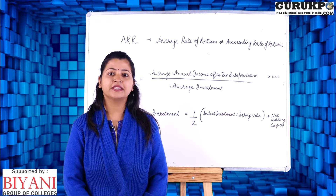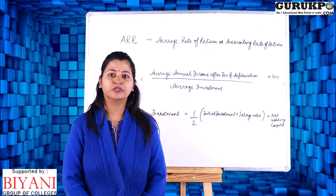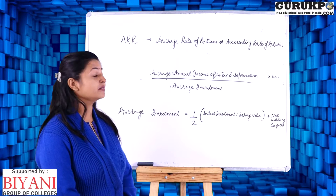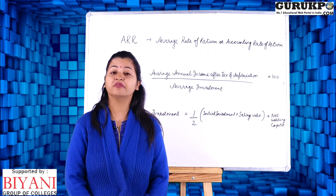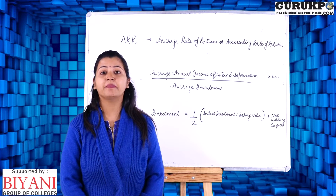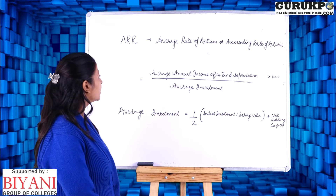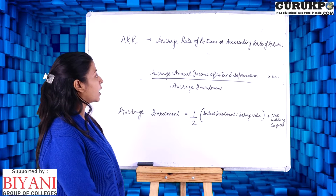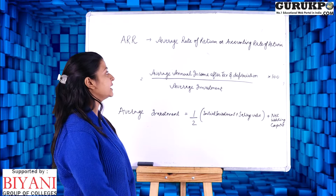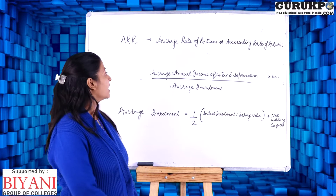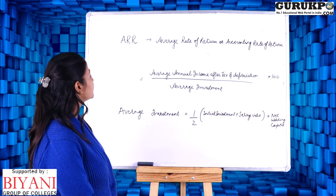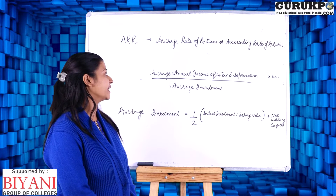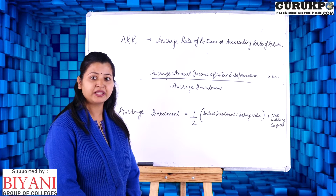ARR means average rate of return, or accounting rate of return. It is used to measure the profitability of an investment proposal and it does not consider the present value of cash inflows. It is also called accounting rate of return because it uses accounting data, and its formula is: average annual income after tax and depreciation, divided by average investment, into 100.